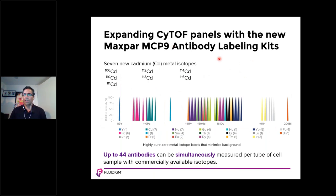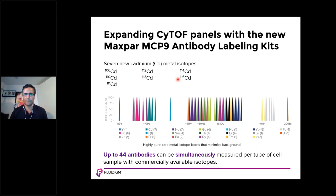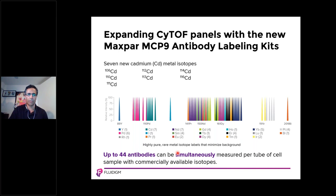I'm also excited to share the addition of seven cadmium isotopes to our portfolio for antibody labeling and expansion of CyTOF channels. The cadmium isotopes are available in seven different metal isotopes: 106, 110, 111, 113, 114, and 116. The seven new cadmium metal isotopes allow you to expand your antibody panel from 37 up to 44 markers using commercial reagents. In addition, you can have live and dead indicators as well as cell ID reagents, which allows the analysis of more than 50 parameters simultaneously on single cells.